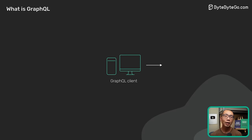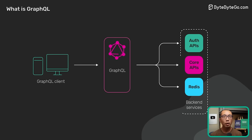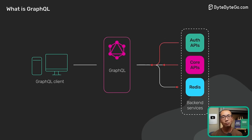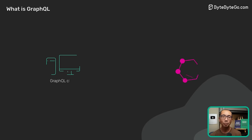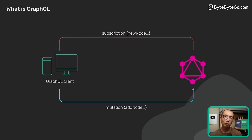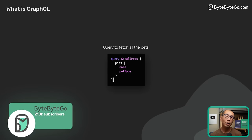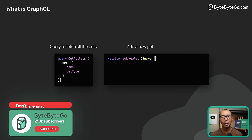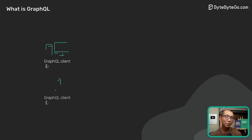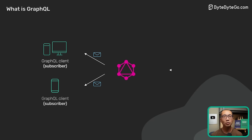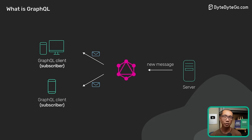GraphQL sits between the clients and the backend services. It could aggregate multiple resource requests into a single query. It also supports mutations and subscriptions. Mutations are GraphQL's way of applying data modifications to resources, while subscriptions are GraphQL's way for clients to receive notifications on data modifications.